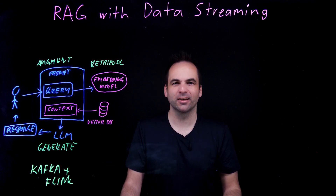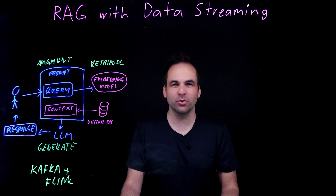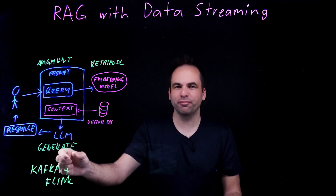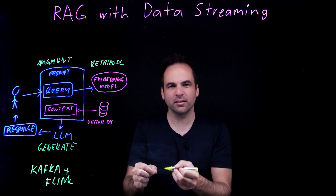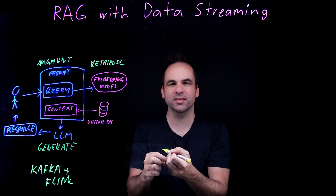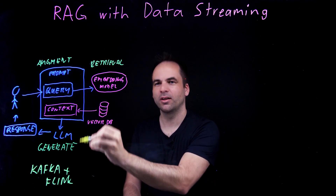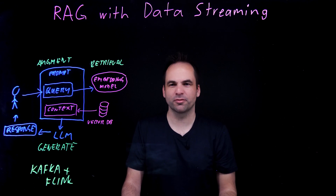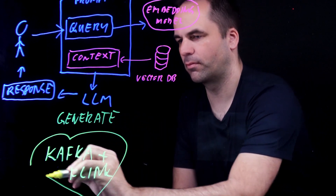With Flink, you can do stateless stream processing — for example, for an ETL process continuously at scale in real time. Or you can do stateful stream processing, where you take data feeds from different sources and feed them into a processor to take action at the right time. You combine data from different sources and feed this context into the large language model so that you get the right response. Apache Kafka and Apache Flink together are truly a match made in heaven for generative AI architectures.